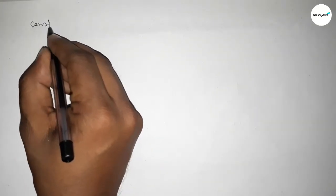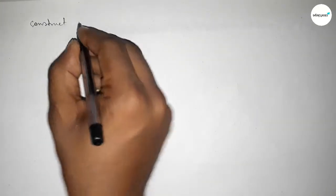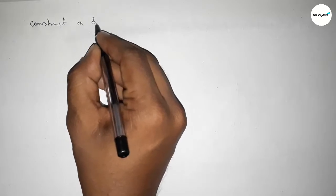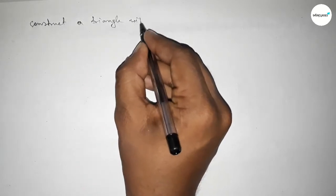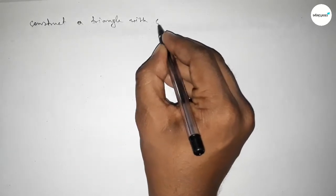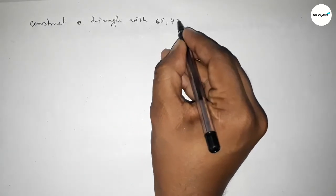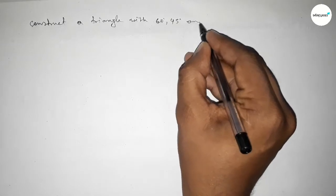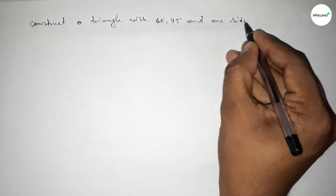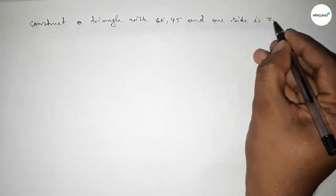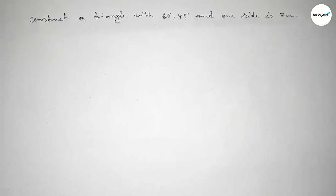Hi everyone, welcome to SSR Classes. Today in this video we have to construct a triangle with two given angles — 60 degrees and 45 degrees — and one given side of 7 centimeters. So let's start the video.